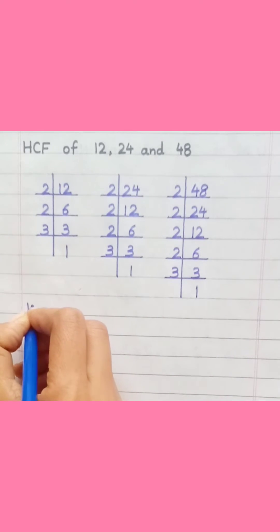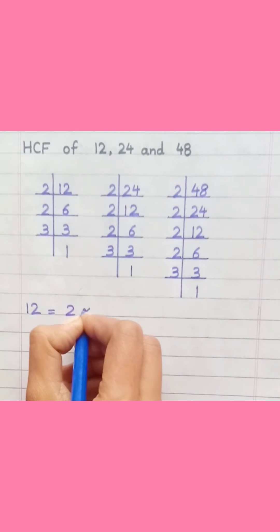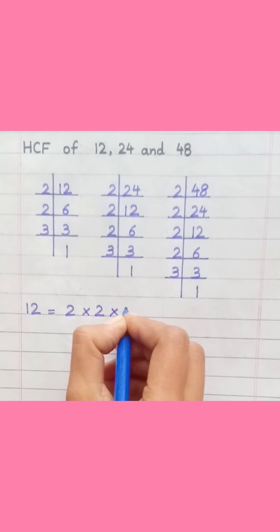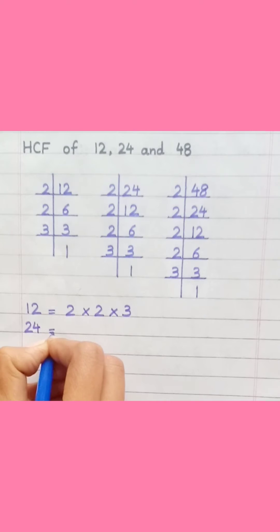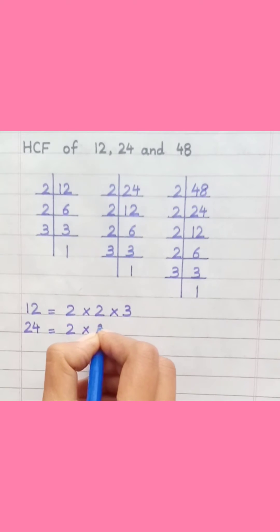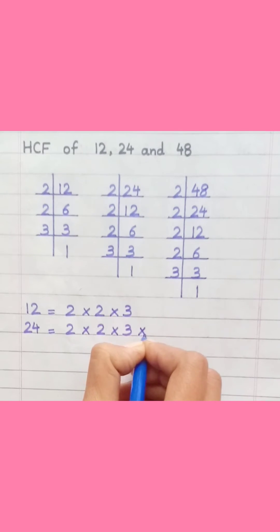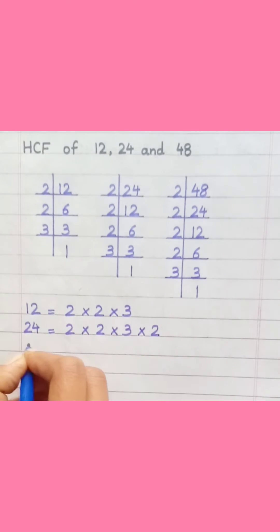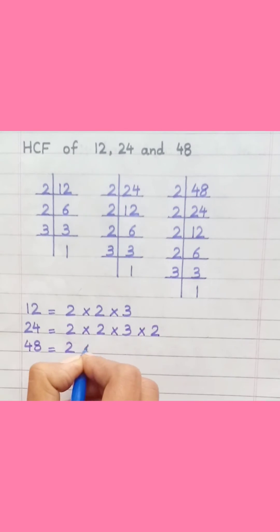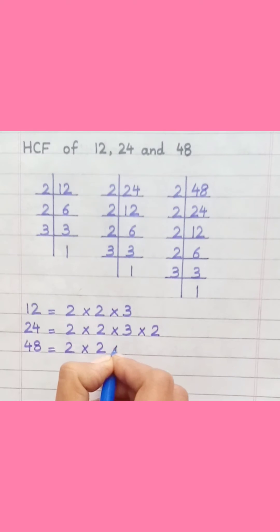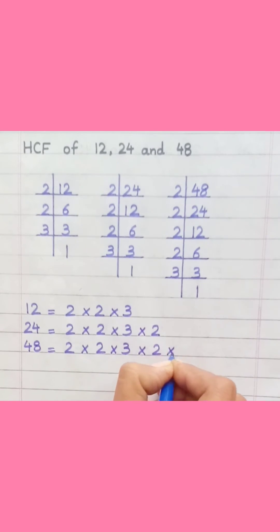12 equals 2 multiply 2 multiply 3. 24 equals 2 multiply 2 multiply 3 multiply 2. 48 equals 2 multiply 2 multiply 3 multiply 2 multiply 2.